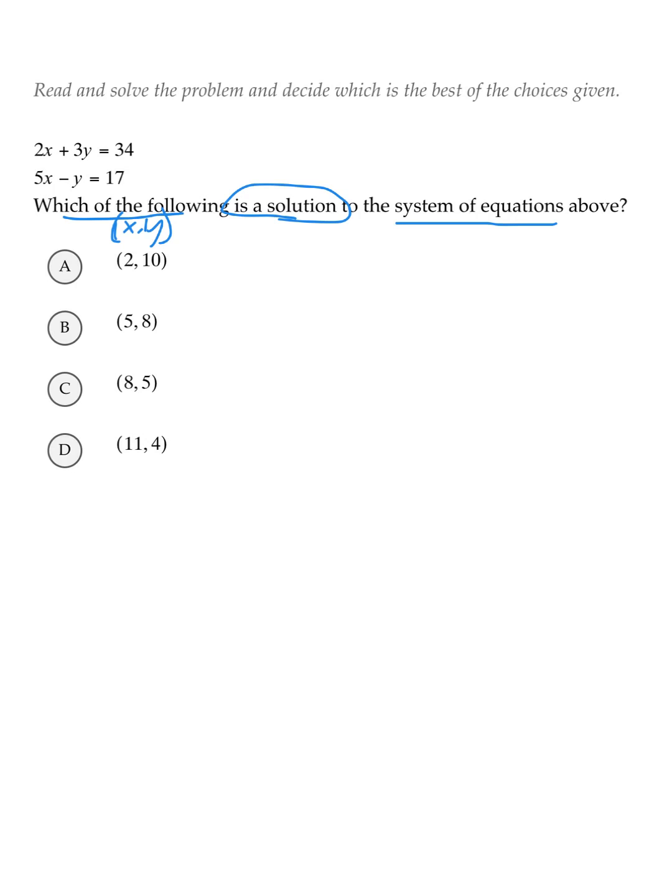Let's start with answer A. x is 2 and y is 10. I'm going to start with the first equation to see if this coordinate pair actually works. We would get 2 times x, which is 2 times 2, and then add 3 times y, which is 3 times 10. So, 2 times 2 is 4, 3 times 10 is 30, so 4 plus 30 equals 34.